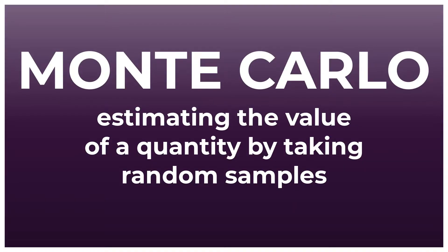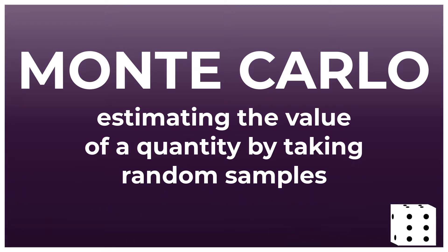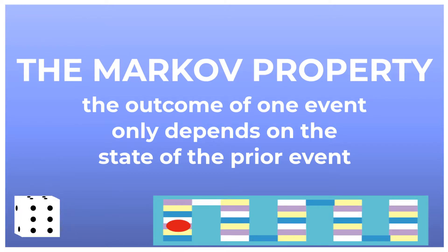Monte Carlo refers to estimating the value of a quantity by taking random samples — rolling a die to see the probability of getting a 6 is an example of this. The Markov property means that the outcome of the next event depends only on the event beforehand, kind of like moving spaces on a board game. Sampling multiple times makes this a chain.